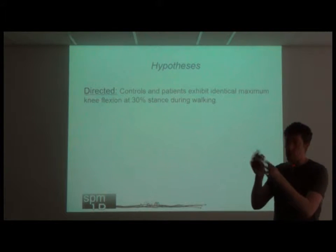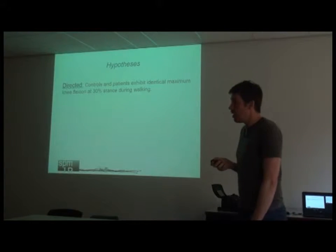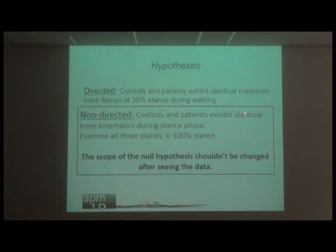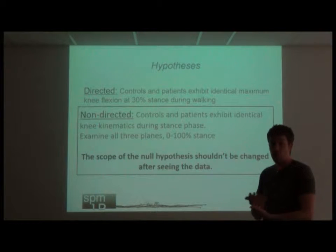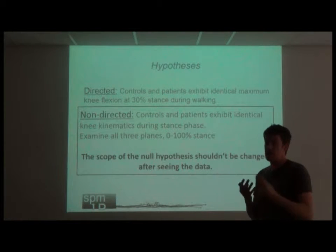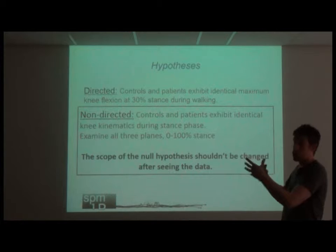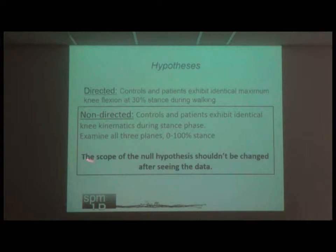We are biased by our observations to focus on a particular aspect of movement. Strictly speaking, our hypotheses don't tend to be directed. The correct hypothesis should be: 'controls and patients exhibit identical knee kinematics during the stance phase,' meaning we need to examine all three planes from 0 to 100% stance, without being biased by a subjective focal point derived from observing the data. It's not necessarily wrong — people may have good expertise guiding them — but statistically it is not correct.